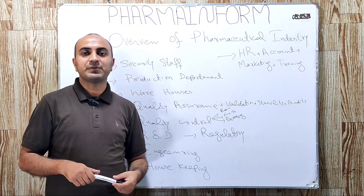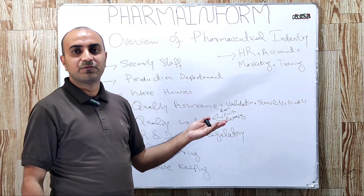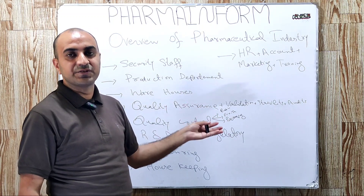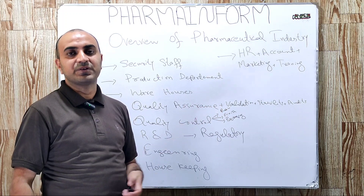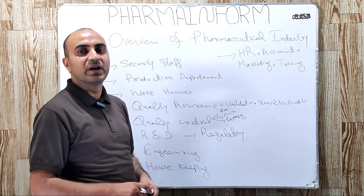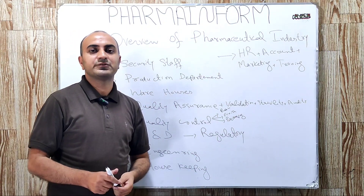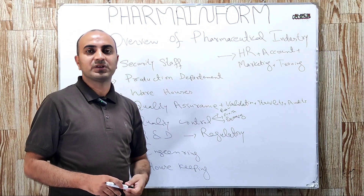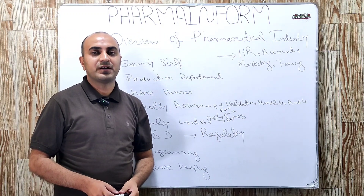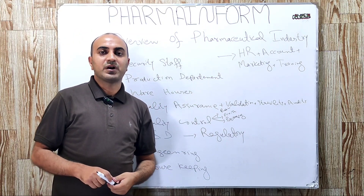The next one is the housekeeping department, or the cleaners, which are very important for the cleaning of pharmaceutical industry and its various sections including production, QC, and other departments. Other allied departments situated inside the pharmaceutical industry include HR department, accounts and finance department, marketing department, and training department.